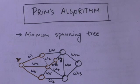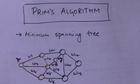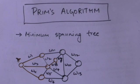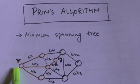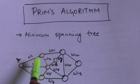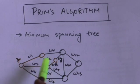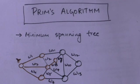Hello friends, welcome back. In this tutorial we will study about Prim's algorithm. Prim's algorithm is an algorithm to find the minimum spanning tree of a given weighted graph. In Prim's algorithm, the tree starts from an arbitrary vertex and grows until the tree spans all the vertices of the graph to form a minimum spanning tree.